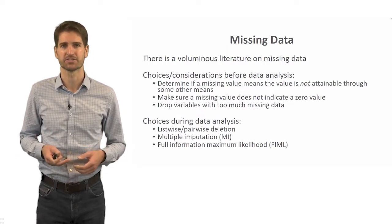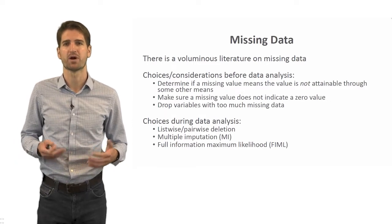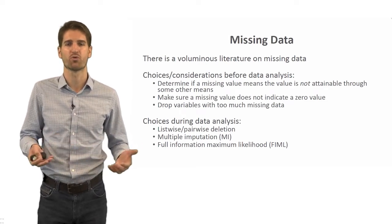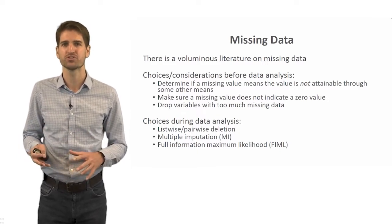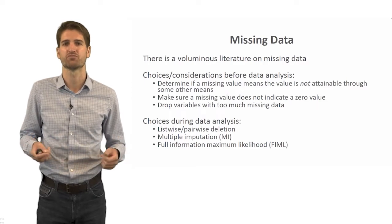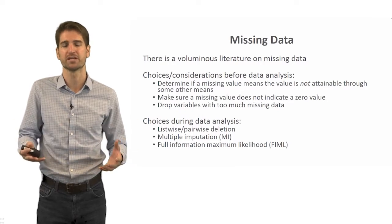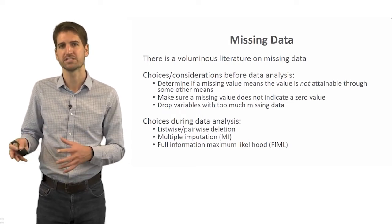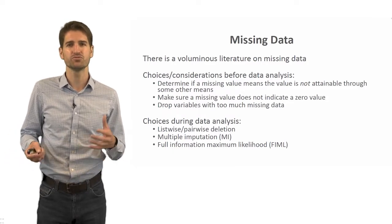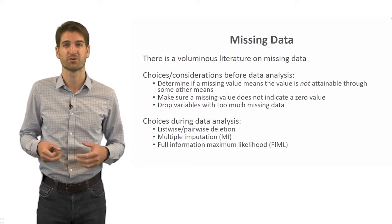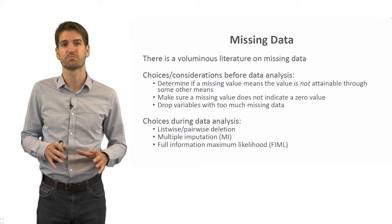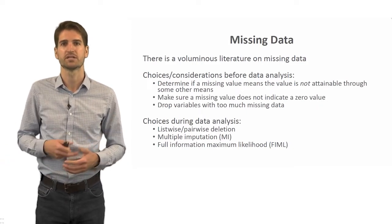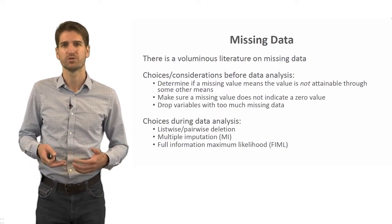During data analysis, some of the most popular missing data techniques come into play. Many statistical software packages default to listwise or pairwise deletion. With listwise deletion, if one person has a missing value on any variable in the model, they are removed from the analysis. This might not be a bad approach if you don't have much missing data and those data are missing completely at random. However, if there is a more substantial amount or non-random missingness, you'll want to pursue multiple imputation or full information maximum likelihood, and there are R packages that make these approaches feasible today.